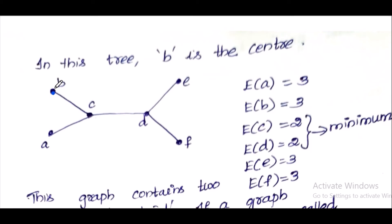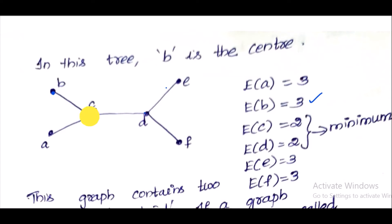For vertex B, the maximum distance: B to C is 1, C to D is 2, D to E is 3, D to F is 3 — so the eccentricity of B is 3. For vertex C: C to B is 1, C to A is 1, C to D is 1, C to E is 2, C to F is 2 — maximum distance is 2, so eccentricity of C is 2.